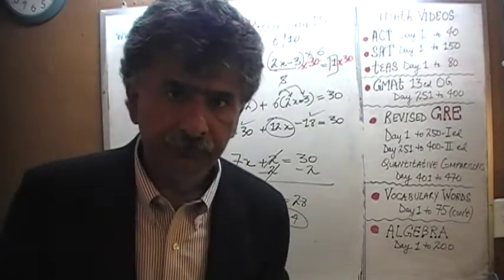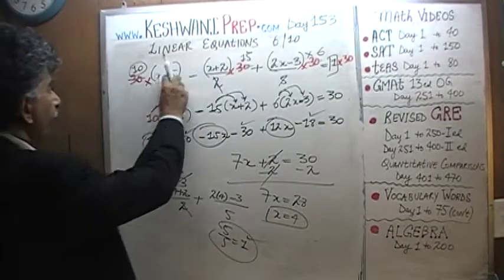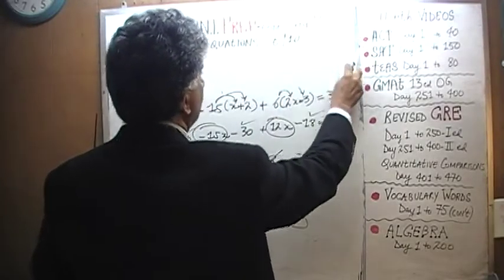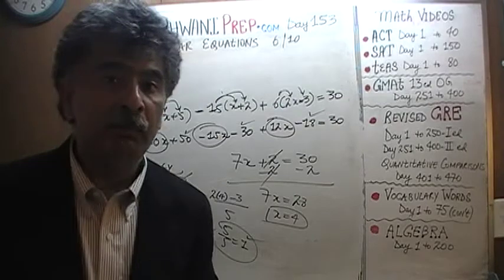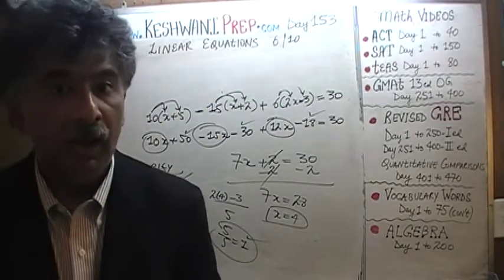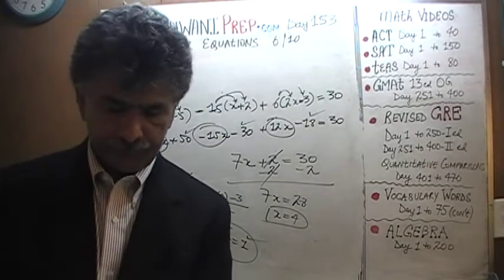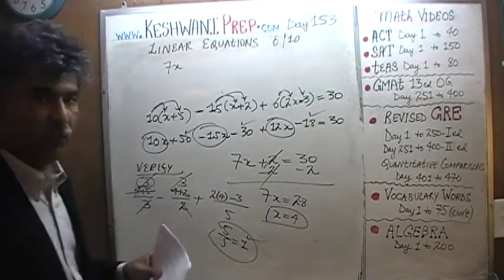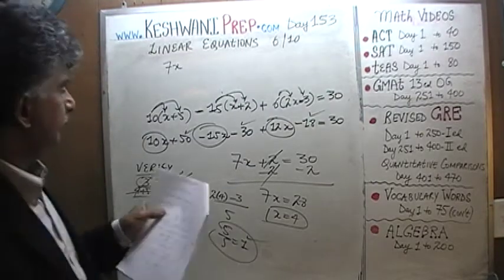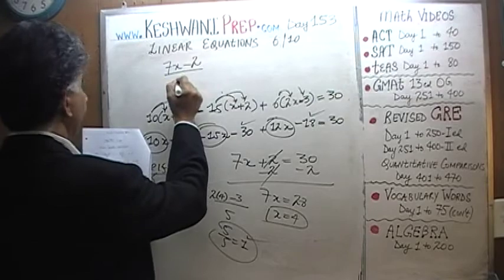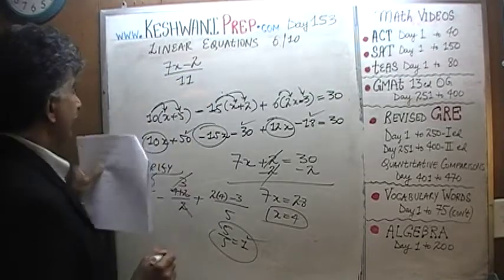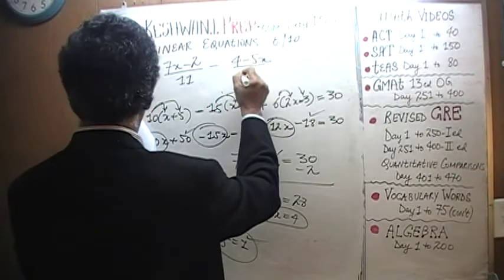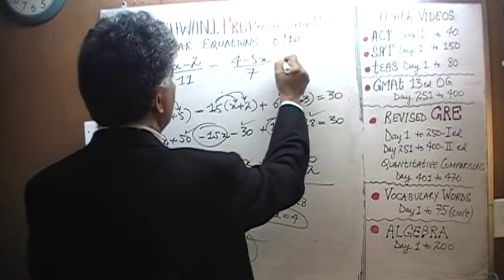Do you want to do one more? Yes? Let's do one more. Never stand in the way of a person who is hell-bent on doing one more algebra problem. 7x minus 2 over 11, minus 4 minus 5x over 7 — we are told it equals 6.